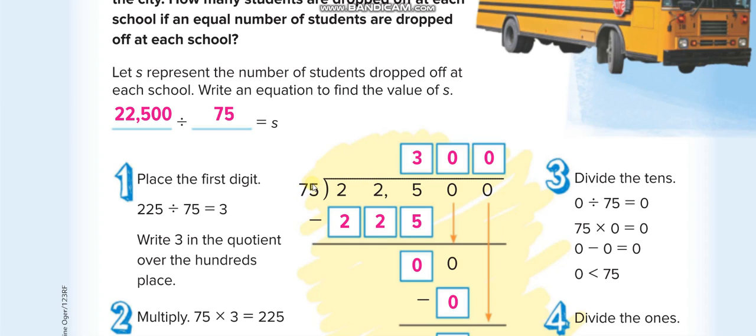So we have to find out 75 times what is equal to 225 or less than that. So we know that 75 times 3 is equal to 225. When we minus we get 0.